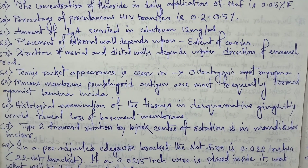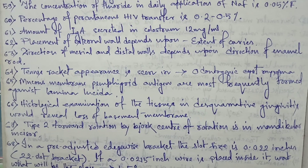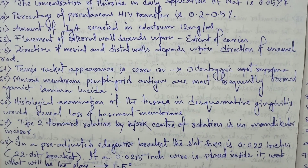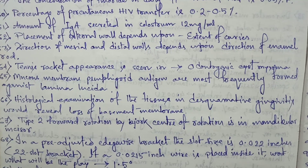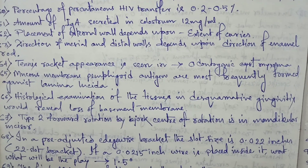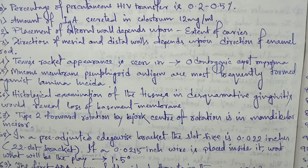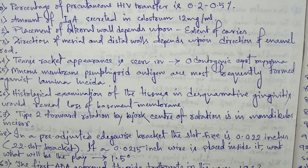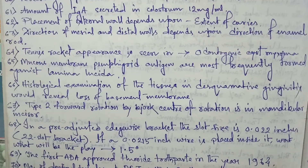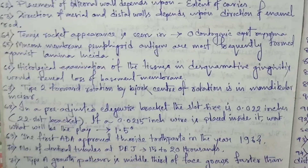Center of rotation is in mandibular incisor. In a pre-adjusted edgewise bracket, the slot size is 0.022 inches. If a 0.0215 inch wire is placed inside it, the play will be 1.5 degrees.